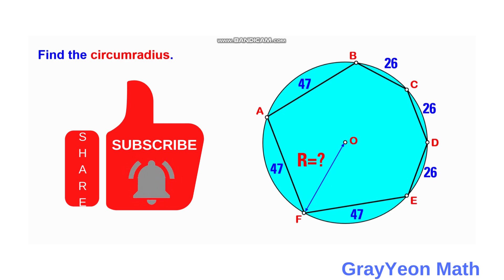Welcome to GrayYeon Math. We are asked to solve this problem. We have a circle with center at O and a hexagon with sides of 47 units for three sides and 26 units for the other three sides. We are required to find the radius of this circle.